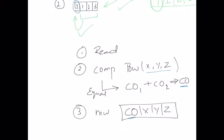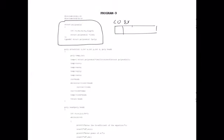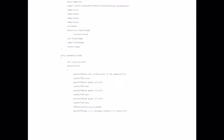Now looking at the actual code: the node structure contains a coefficient field, exponents of x, y, and z. There is also a flag bit attached to each node. The flag bit indicates whether that particular term has already been considered during addition. If it has been considered, it won't be processed again. Finally the node has a link pointer.